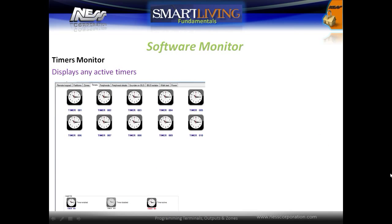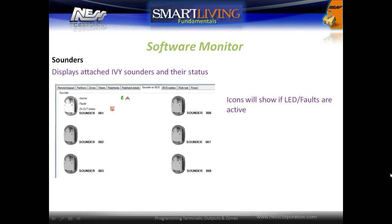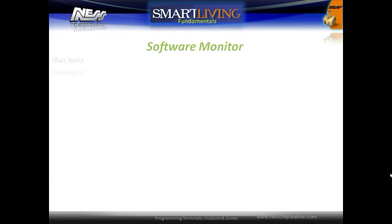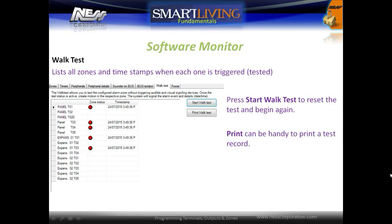The timers monitor window displays any active timers in the system. The peripherals window displays attached devices and any current faults. The sounders window displays the status of any attached IV programmable sirens. The IBUS isolator window displays voltage from attached bus isolators, which can be useful to monitor voltage for part of a system. The walk test window allows testing of all the security zones with the ability to print a report; as zones are tested, a date and time stamp is recorded.